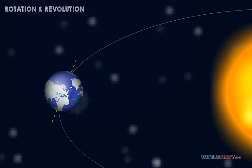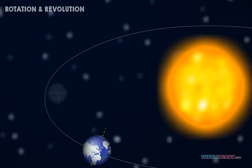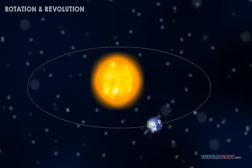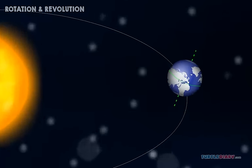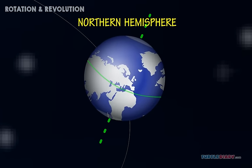Sometimes the northern hemisphere is tilted toward the Sun. And sometimes it is tilted away from the Sun. In January, the northern hemisphere is tilted away from the Sun.